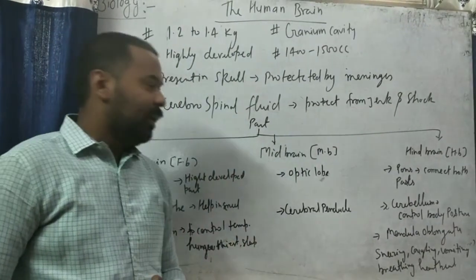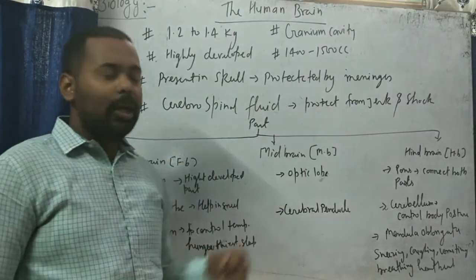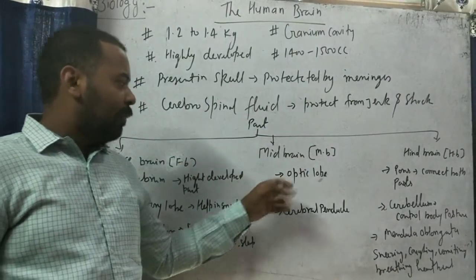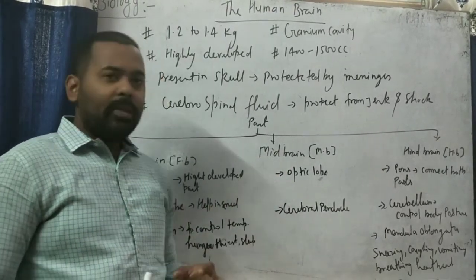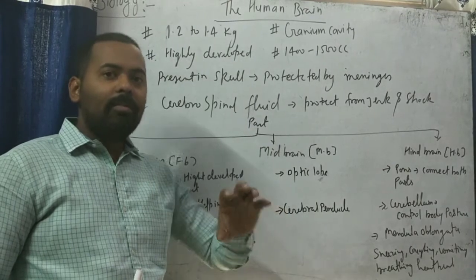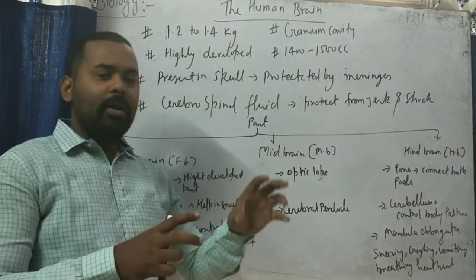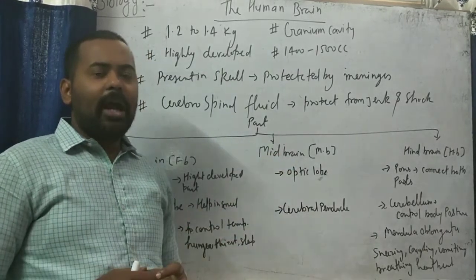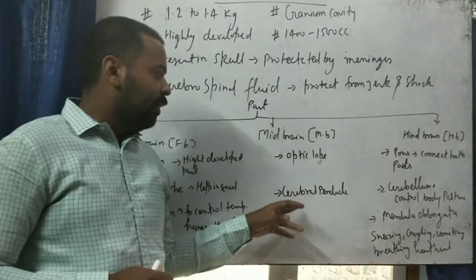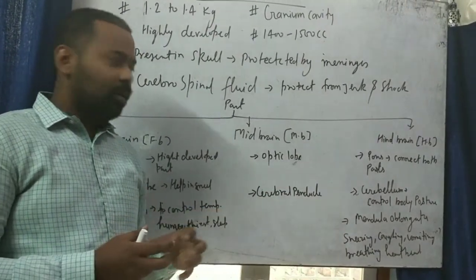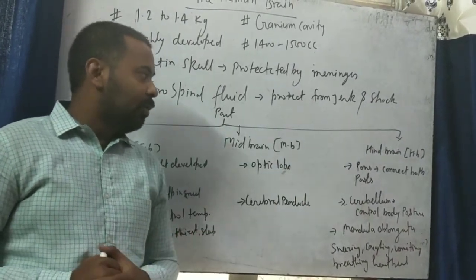The second part is the midbrain. It is a very small part of the brain which connects the forebrain to the hindbrain. It has two lobes: the optic lobe and the cerebral peduncle. The function of the optic lobe is to recognize images while moving — it helps us identify the image and color of a moving object. The cerebral peduncle helps to coordinate the sensory and motor neurons.